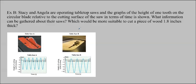We've got one more question, and you can pause the video and do this on your own, but I'm going to do it for you, so pause the video right now. So Stacey and Angela are operating tabletop saws and the graph of the heights of one tooth on the circular blade relative to the cutting surface of the saw in terms of time is shown. What information can be gathered about their saws, and which would be more suitable to cut a piece of wood 1.8 inches thick. I'm going to say that Stacey is the A, and Angela is the B, even though Angela starts with A.